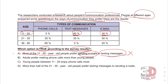B: Adults prefer making phone calls more than young people. Yetişkinler prefer making phone calls, tercih ediyorlar, more than young people — gençlerden daha çok telefonla konuşmayı tercih ediyorlar. As we can see, adults are at 60% and young people are at 5% or 35%, so the preference is declining going down with age. Yes, this is true — adults do prefer making phone calls more than young people. The answer is B.